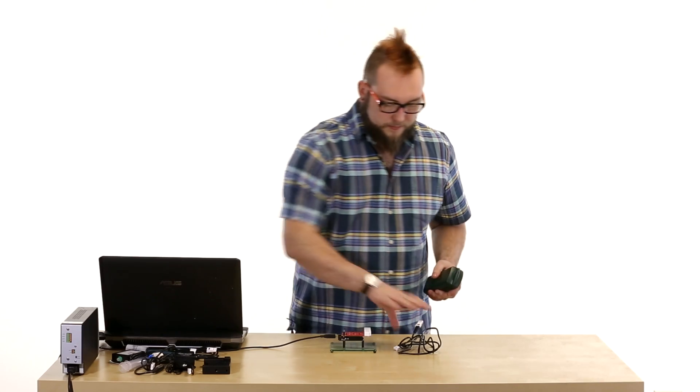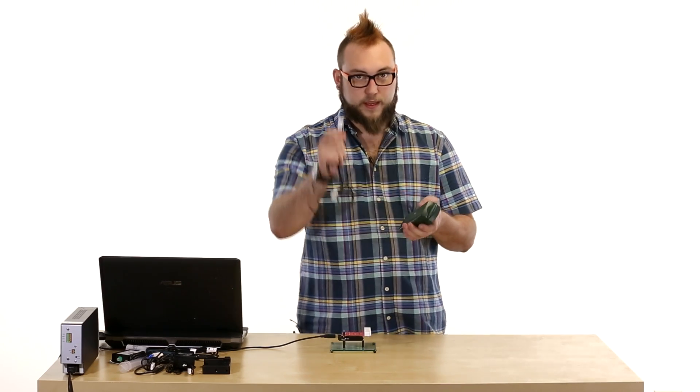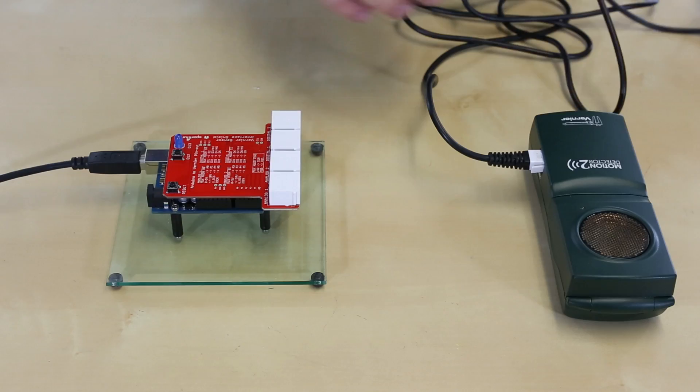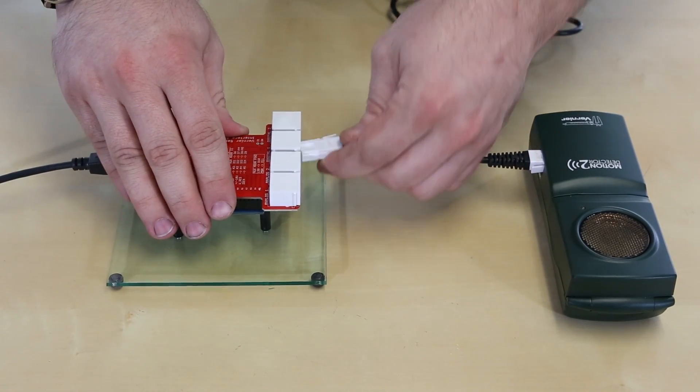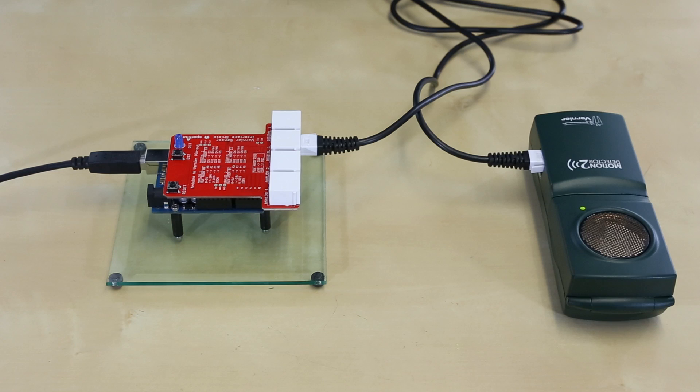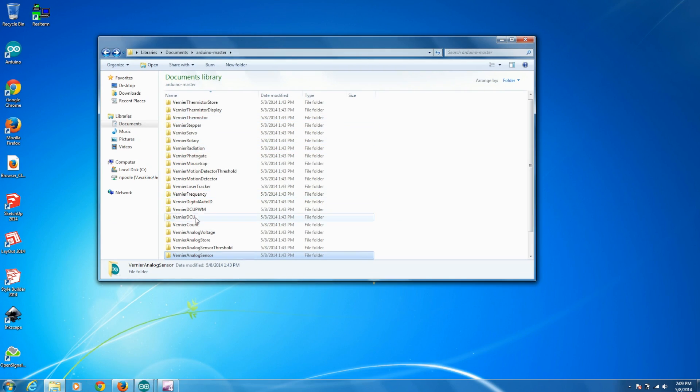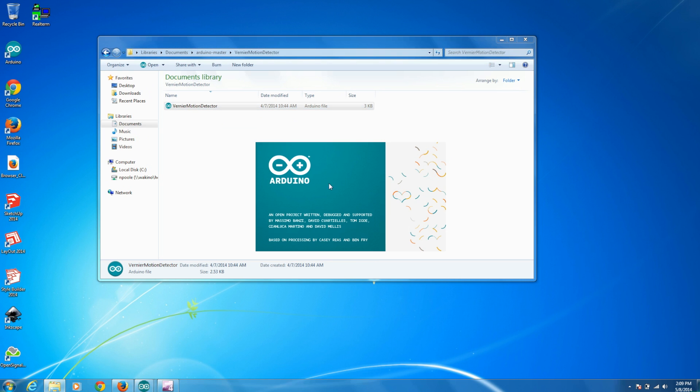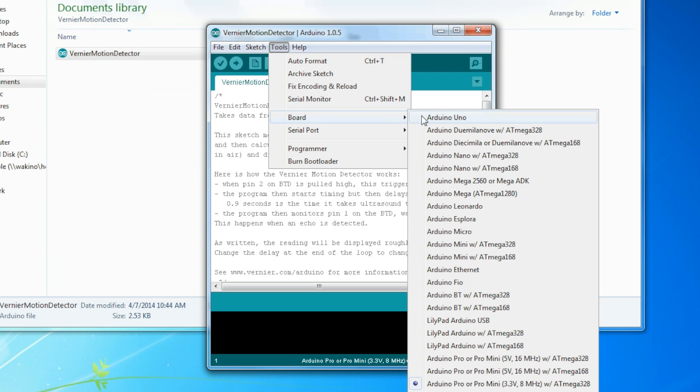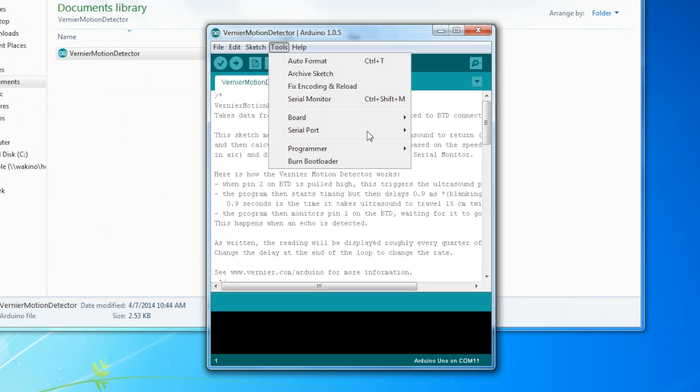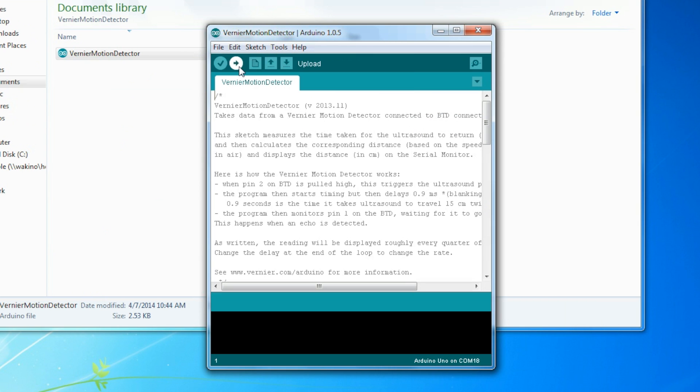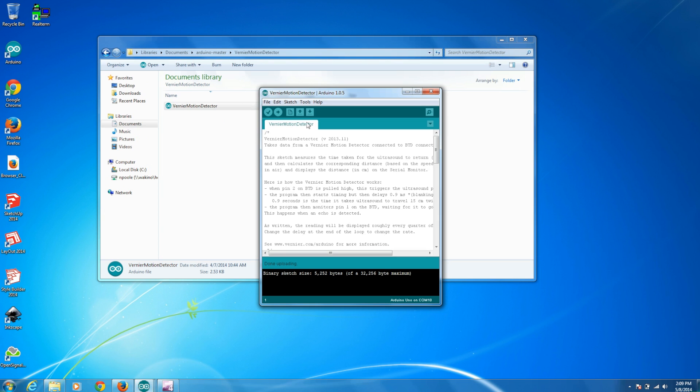Now, to plug it into the shield, it comes with this cable, again with the British Telecom connector, and plug the other one into one of the digital ports. So we're going to go into digital one on the shield. Here you can see I've opened up the library again, and I'm just going to look for Vernier Motion Detector. Open that up in Arduino, and then go to tools again and check that I have the correct Arduino selected, and we'll upload that.